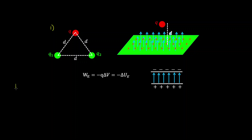If we want to calculate the work done by an external agent to move this charge Q from infinity to this point A in the electric field of these two fixed charges, we simply multiply the test charge Q by the change in potential between infinity and point A. Note that the work done by the external agent is equal to the negative of the work done by the electric field.